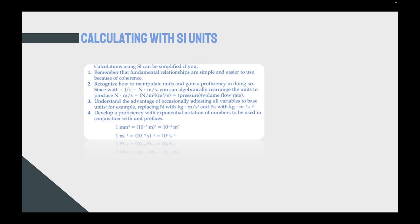To calculate using SI units, you need to keep in mind those points. First, you need to remember that fundamental relations are simple and easier to use because of coherence. You need to recognize always how to manipulate or play with the units to gain a degree of proficiency in doing that. Here we see the watt is joules per second, which equals Newton multiplied by meter per second. Algebraically, you can rearrange the units. So just play around, be able to know when to multiply, when to divide with units, same as what you do with an XY equation.